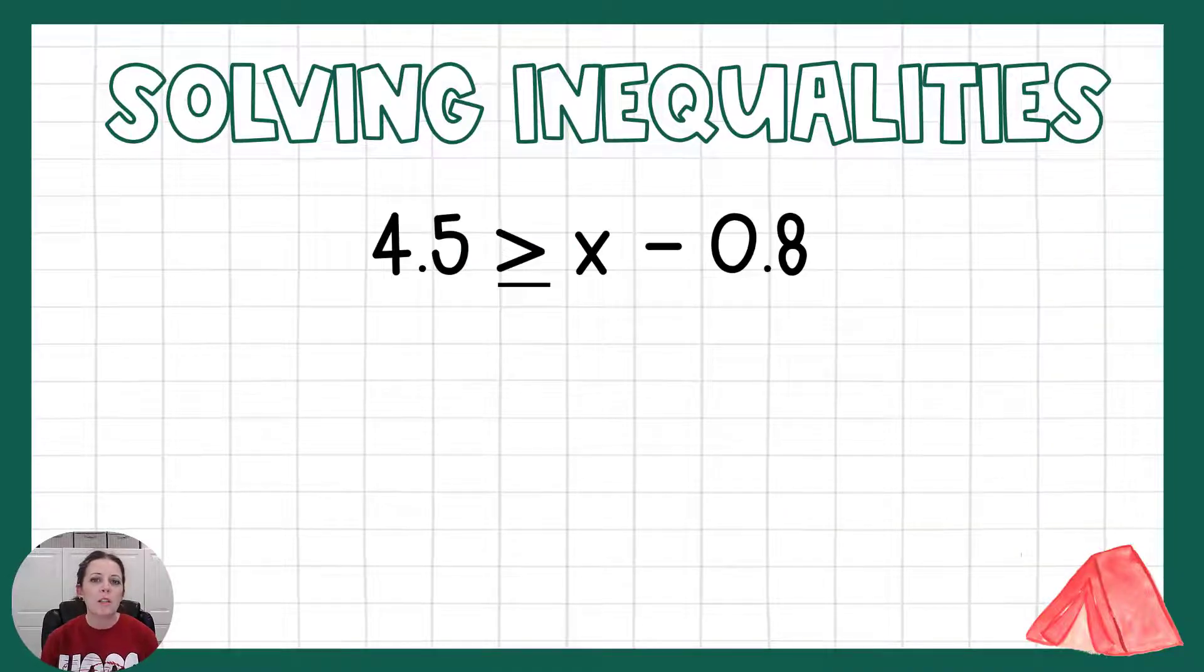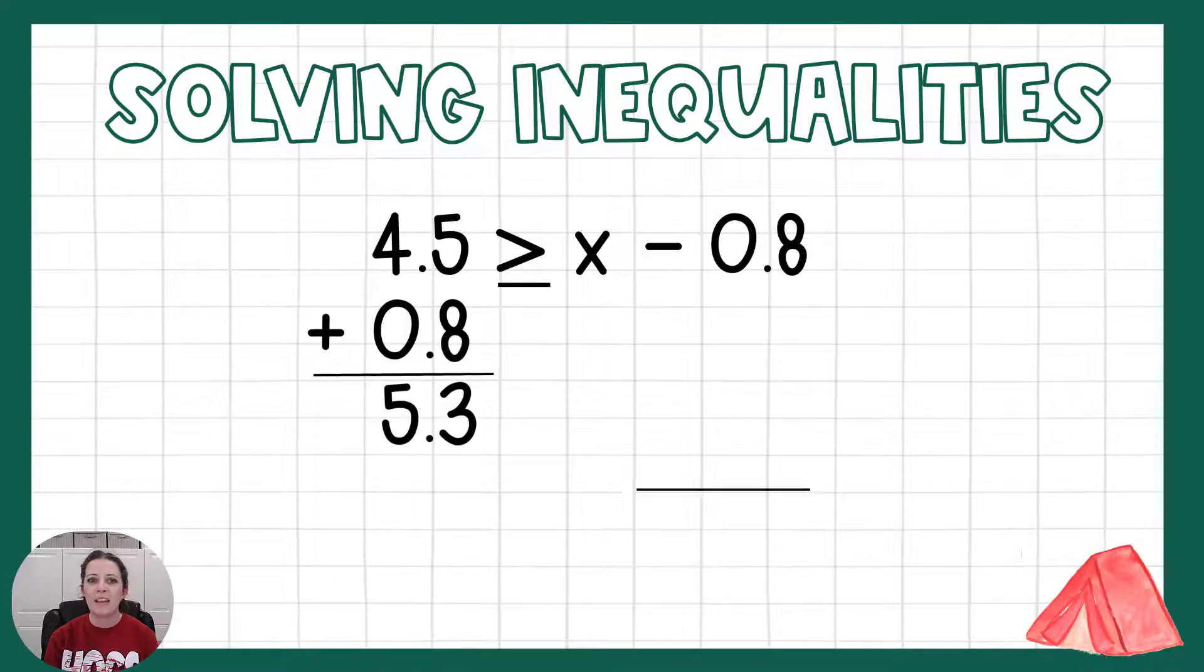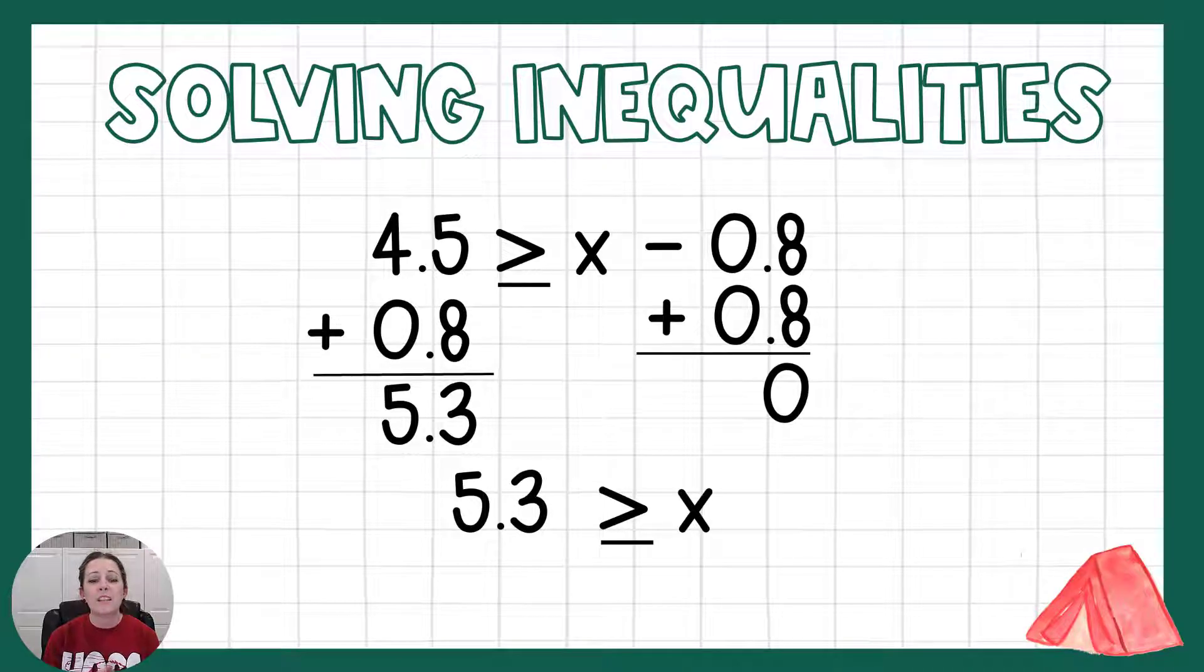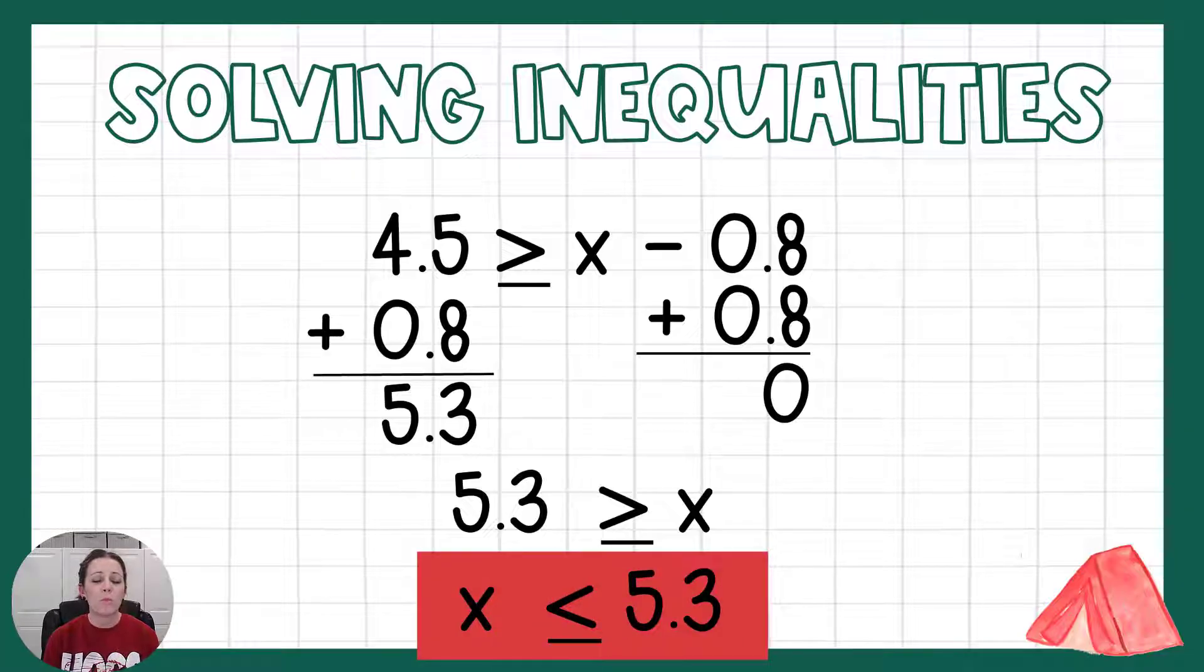One more that's just a little bit different because the x is on the right side of the sign instead of the left side, but it's a subtraction problem. So we're going to do the opposite, and we are going to add 0.08 to both sides. And so this reads 5.3 is greater than or equal to x. And I'm going to show you that we can switch that around, but notice if I move the x and the 5.3 around, I also have to switch that sign around so that it still says 5.3 is bigger than x, or x is less than or equal to 5.3.